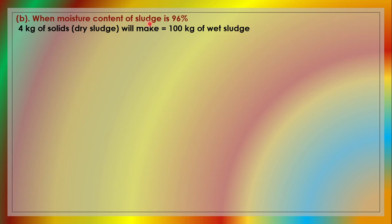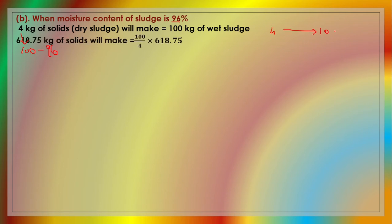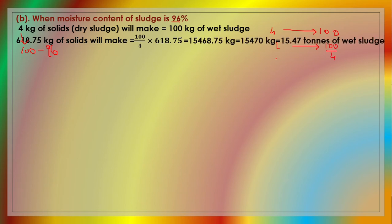In Case B, when the moisture content of the sludge is 96%, it means 4 kg of dry solids will make 100 kg of wet sludge. Therefore, 618.75 kg of dry solids will make (100/4) × 618.75 = 15,468.75 kg, approximately 15,470 kg or 15.47 tons of wet sludge.